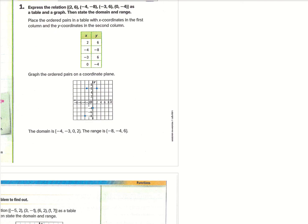So we have the table given to us here. We don't even have to do anything with it. So we have the point (2, 6), the point (4, -8), the point (3, 6), and the point (0, -4).